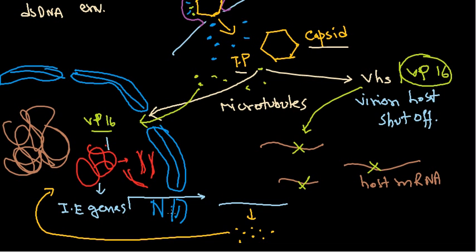At this stage they need to determine whether to create a lytic infection or a lysogenic infection, because HSV can cause both. If the virus determines to stay for a long period of time — to cause a latent or lysogenic phase — it will synthesize some other gene products called lat genes, or latent genes. If latent gene expression is mediated, they will be in the lysogenic phase. But if it is only immediate early and early gene expression, they are going through the lytic phase.